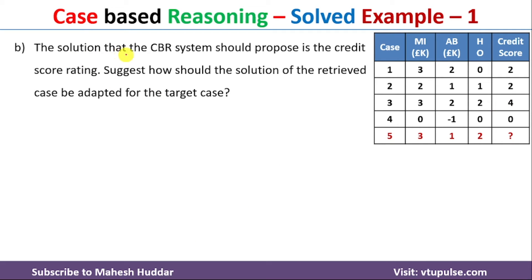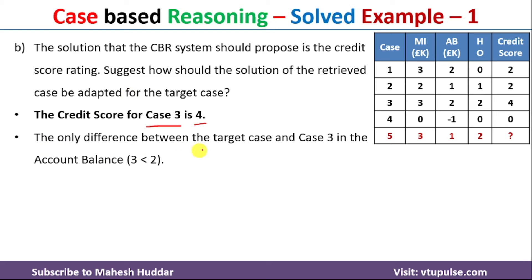Coming to the second question: the solution the CBR system should produce is the credit score rating, as we found in the previous part. The question asks how the solution of the retrieved case should be adapted for the target case. The credit score for the third case is 4. The only difference between the target case and the third case is the account balance: the third case has account balance 2, while the target case has account balance 1.